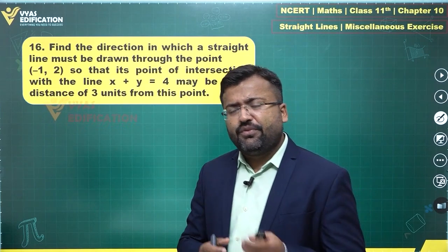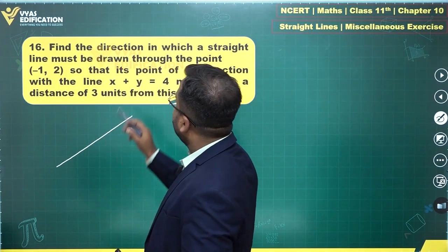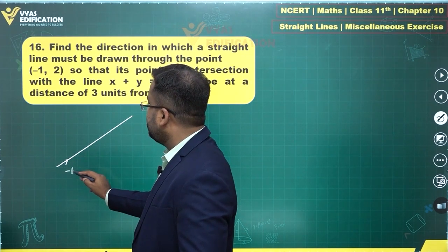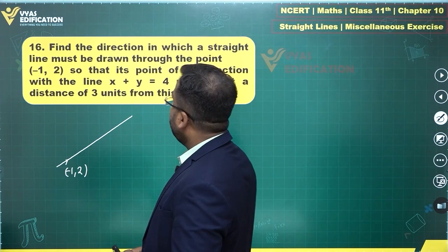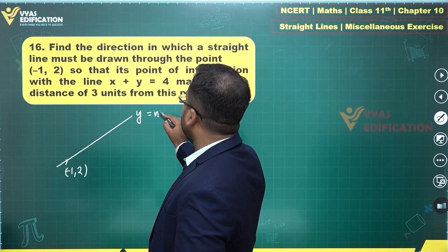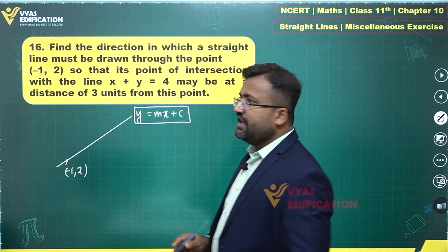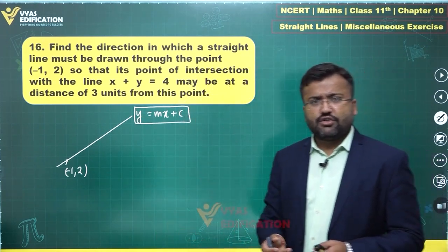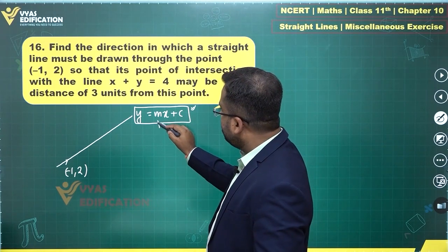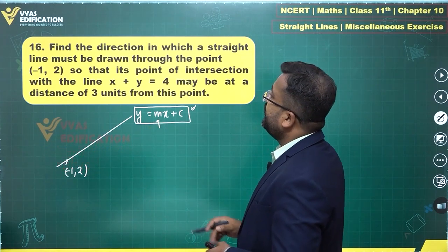We can talk about the slope first and see where that takes us. Let's say the straight line drawn through the point (-1, 2) has the equation y = mx + c. Instead of using general form, let's use the slope form directly, since we need the slope at the end of the day.